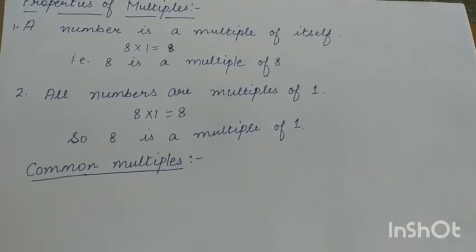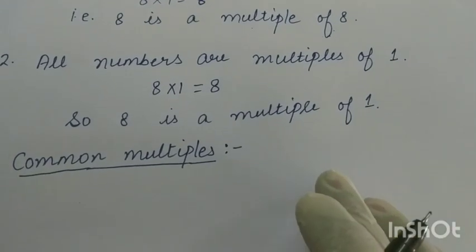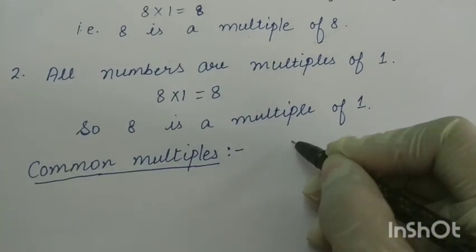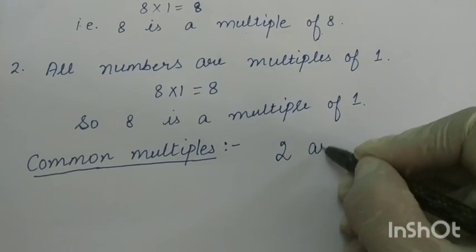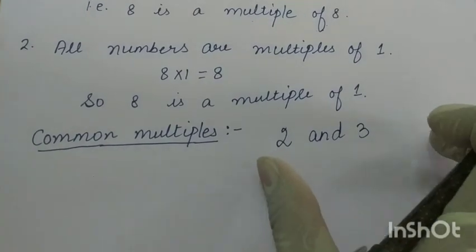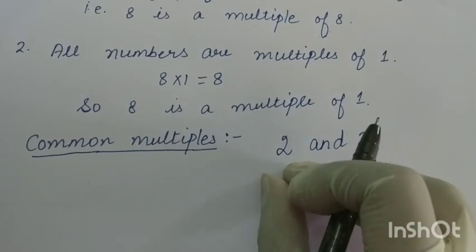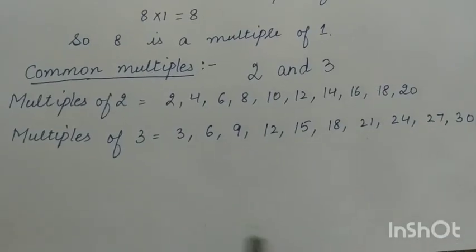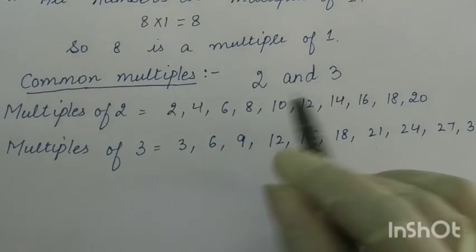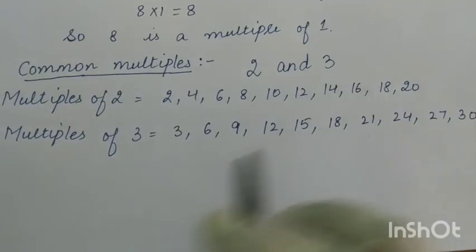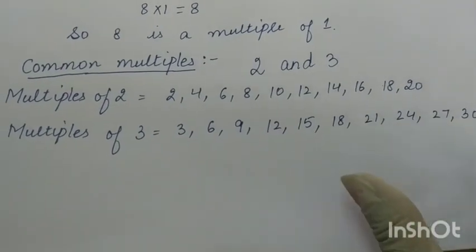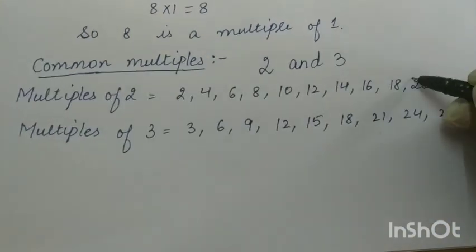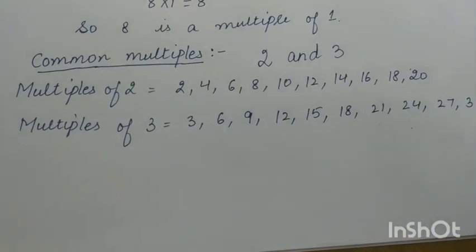The next topic is common multiples. What are common multiples? I'll explain with an example. Suppose we have to find the common multiples of 2 and 3. First, we write the multiples of 2, and after that we write the multiples of 3. These are the first 10 multiples of 2 and these are the multiples of 3. Now we have to find the common multiples — those multiples that appear in both 2 and 3 are the common multiples.